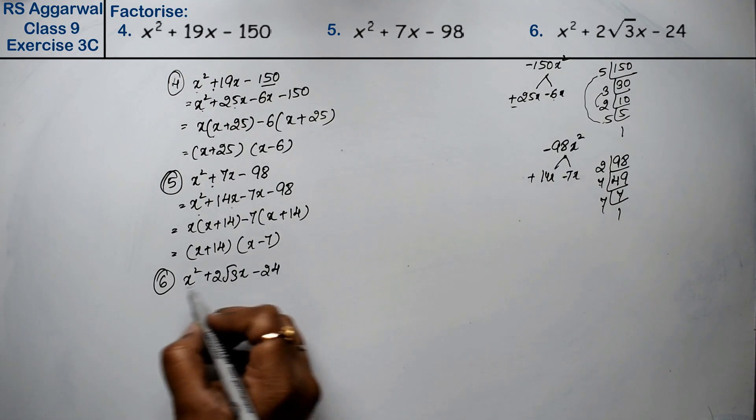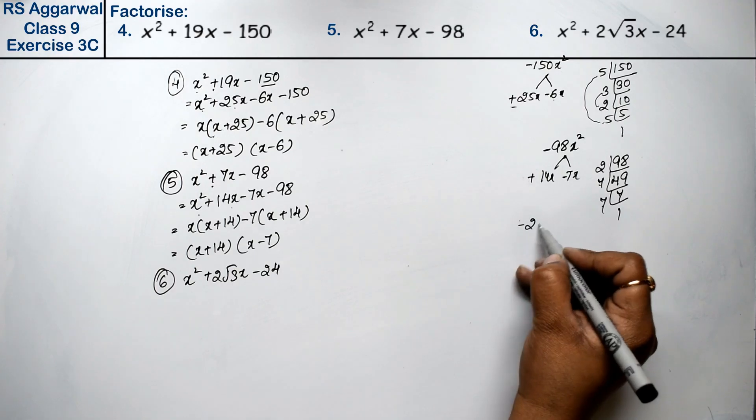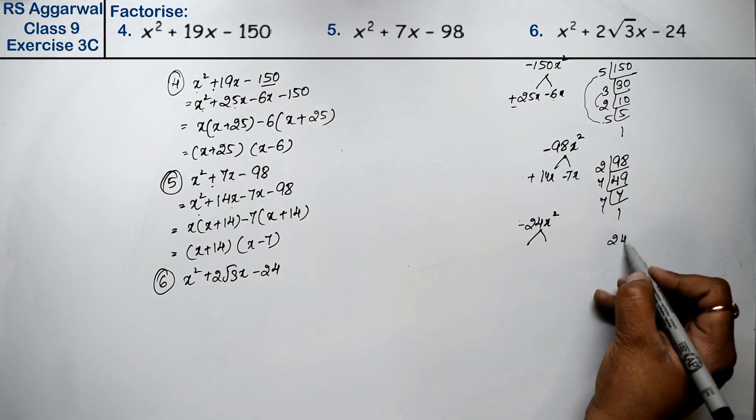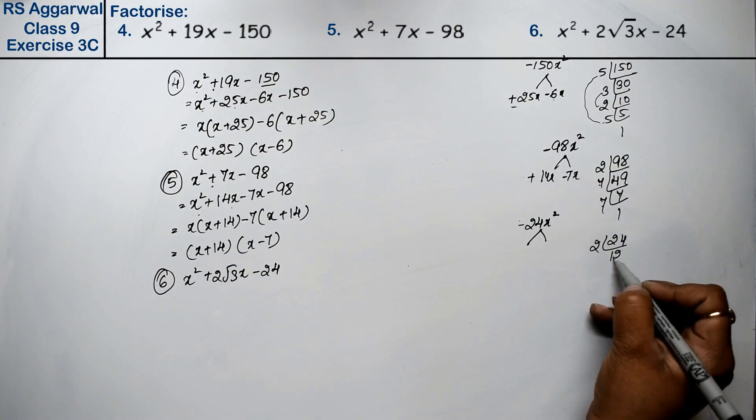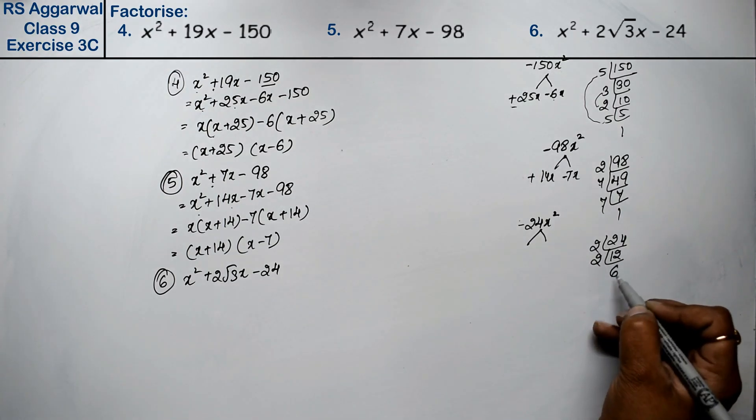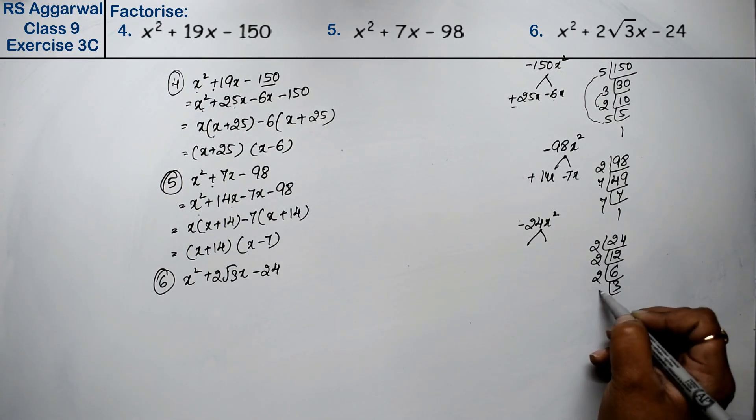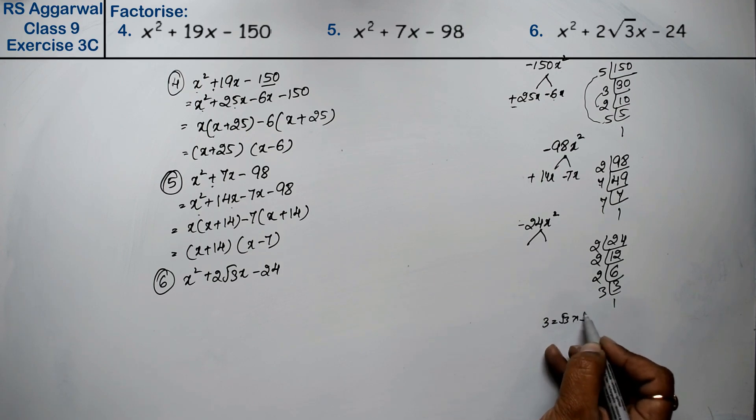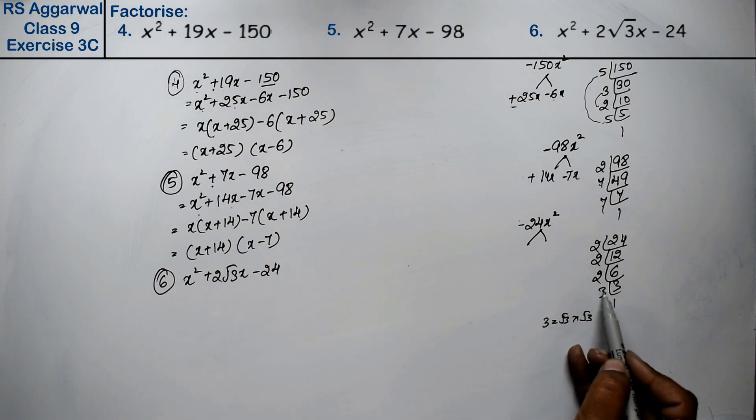Friends, now if we multiply both of them, we have minus 24x square. Let's take the factors: 24, 2 times 12, 2 times 6, 2 times 3, and 3 times 1. Now see, we have 2 root 3. Root 3 means we can write root 3 into root 3.